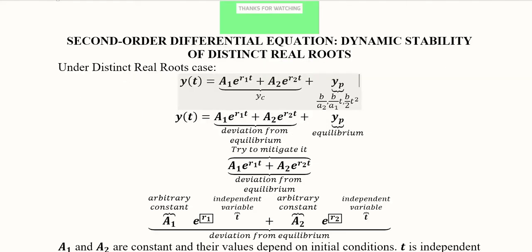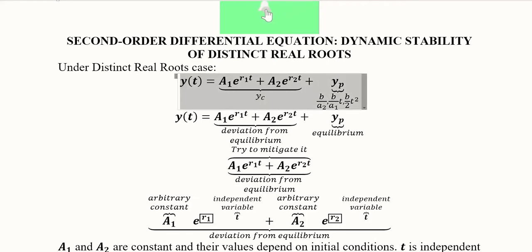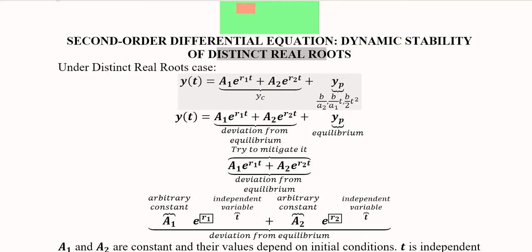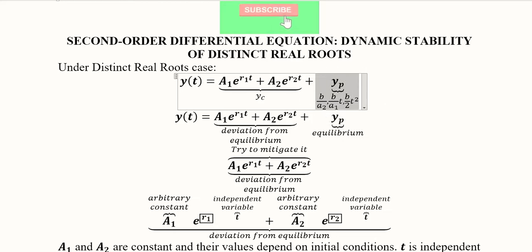Let's get into the details. We will start with y(t), the general solution for the distinct real root case, which has two parts: the complementary function and the particular integral. The particular integral yp can have three possibilities depending upon the values of a1 and a2, and then we have yc.